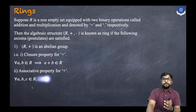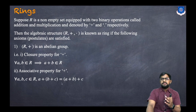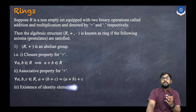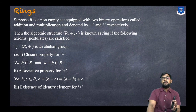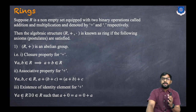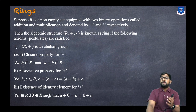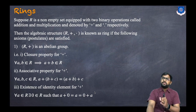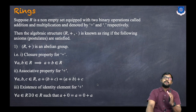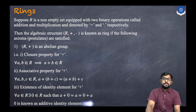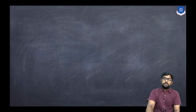The second property is associativity. The third is existence of identity element for addition: for every A belonging to R, there exists 0 belonging to R such that A + 0 = A = 0 + A. This 0 is known as the additive identity.